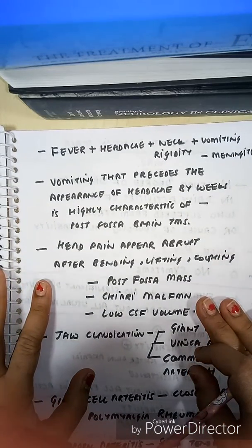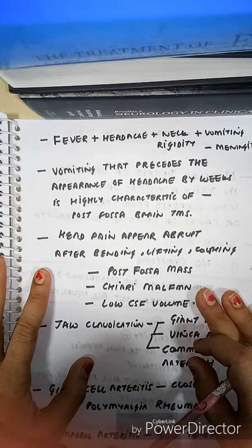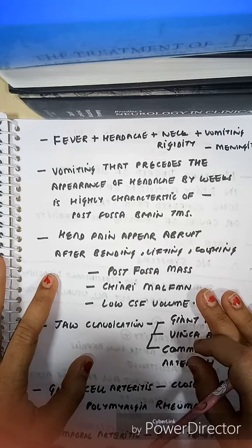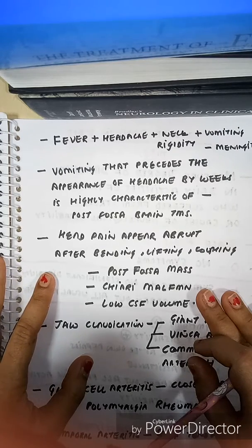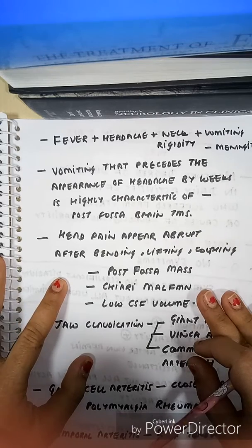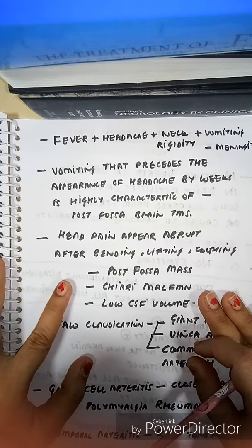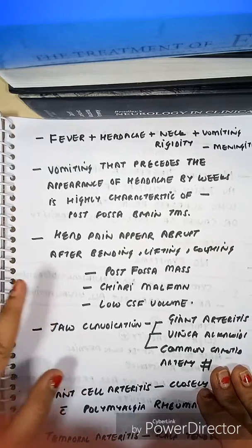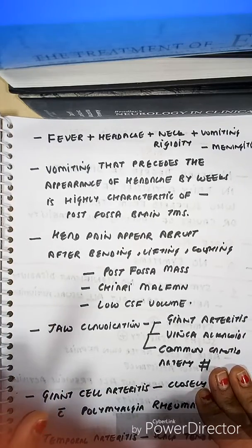If vomiting precedes the appearance of headache by weeks — that is, vomiting started a long time before headache — this is highly characteristic of posterior fossa brain tumors. If head pain appears abruptly and is positional, appearing after bending forward, lifting, or coughing, always rule out posterior fossa mass, Chiari malformations, and low CSF volume.